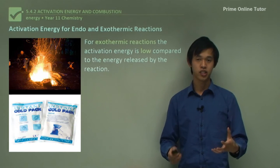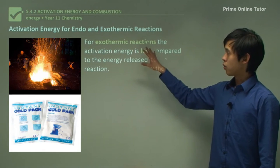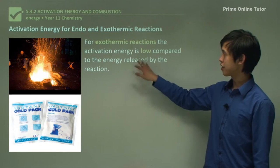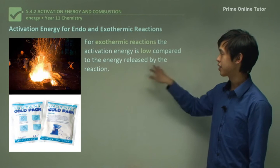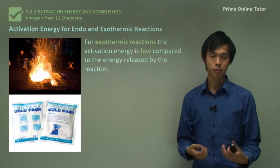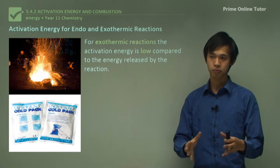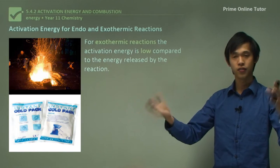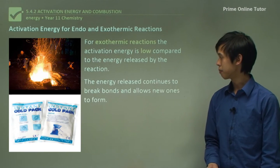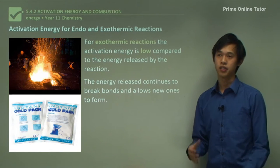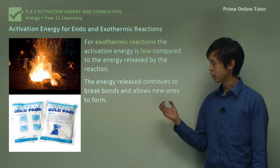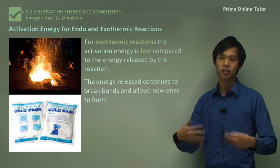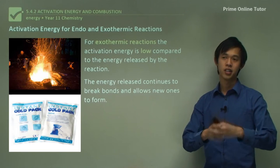For exothermic reactions, the activation energy is very low compared to the energy released by the reaction. When you burn a fuel, the amount of energy it takes to start the fuel is very low compared to the actual heat and energy you get out. That's how we know it's exothermic — the amount of energy you get out severely outweighs the energy you had to put in to start it. A portion of the energy released by the formation of new bonds goes into breaking more bonds in the fuel and oxidant, which allows more energy to be released and the reaction to continue. Only a portion is required to keep that reaction going.